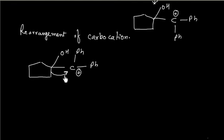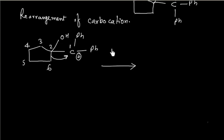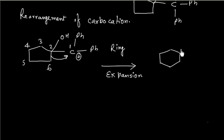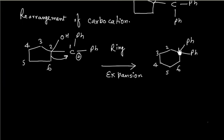If we migrate this group (the C–C bond of the ring), we get ring expansion. Numbering the carbons 1 through 6, we now have a 6-membered ring. Carbon number 1 will have 2 phenyl groups. Carbon number 2, from which the bond broke, will have OH and a positive charge because we have broken a bond from carbon number 2.